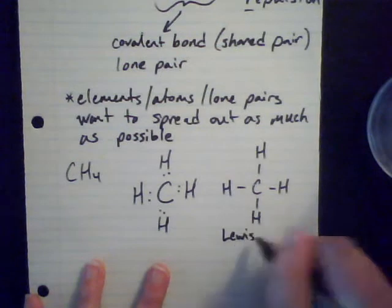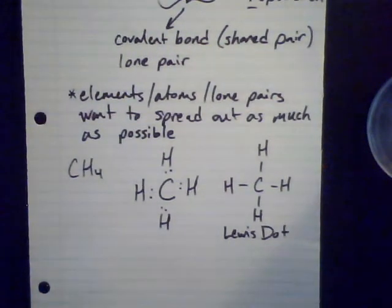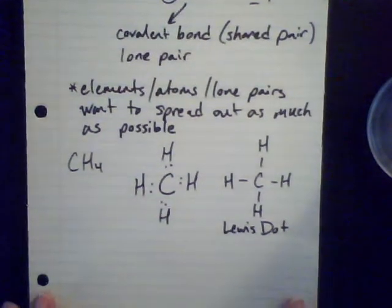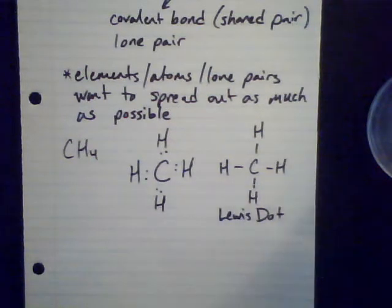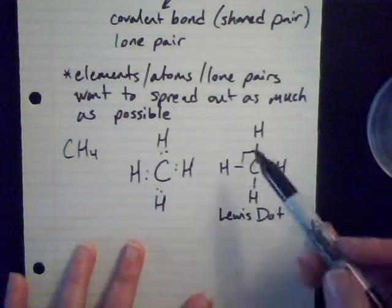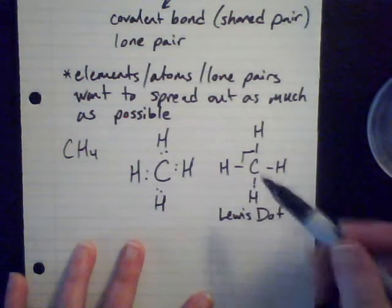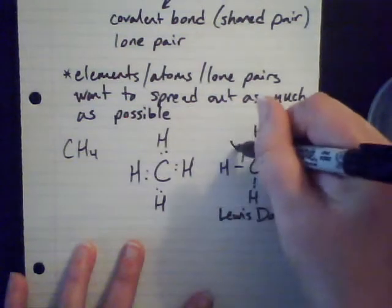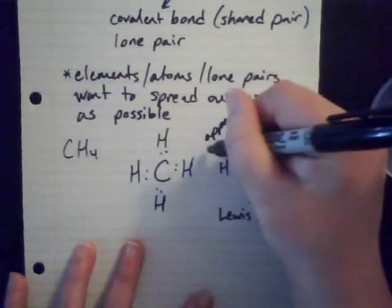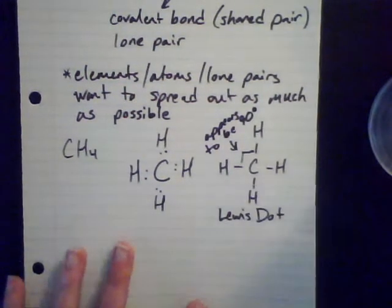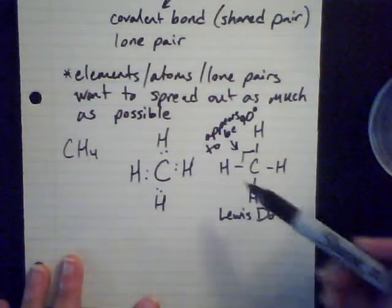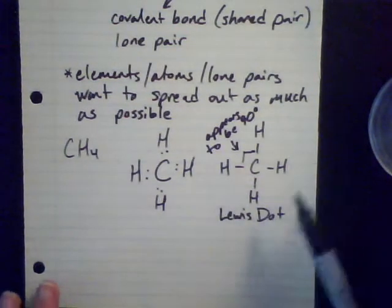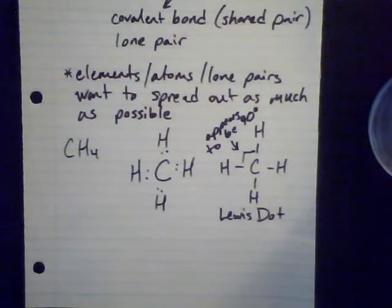So we're going from this two-dimensional model to something three-dimensional. Here's our Lewis dot model. These hydrogens are as spread out as I can possibly make them on a two-dimensional surface, but it looks like I basically have a right angle here — 90 degrees — between the bonds. So this would be the way we would expect it to be, unless we could bring it into three dimensions somehow. And the way that we bring it into three dimensions is using VSEPR.